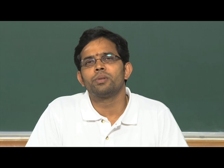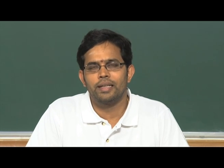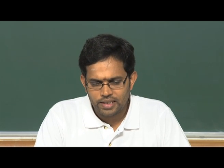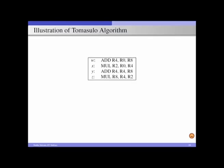We will now discuss an example to illustrate the working of the Tomasulo mechanism. Consider 4 instructions: ADD R4, R0, R8; MUL R2, R0, R4; ADD R4, R4, R8; and MUL R8, R4, R2. Here the first operand is the destination and the other two are source operands. We assume we can dispatch two instructions per cycle, instructions can begin execution in the same cycle they are dispatched, ADD takes 2 cycles, and MUL takes 3 cycles. The ADD and multiply units are not pipelined.